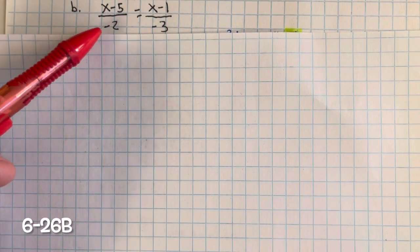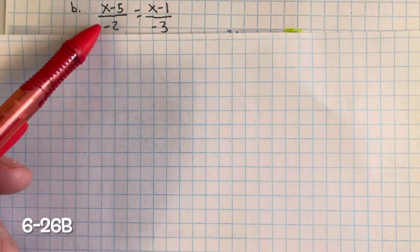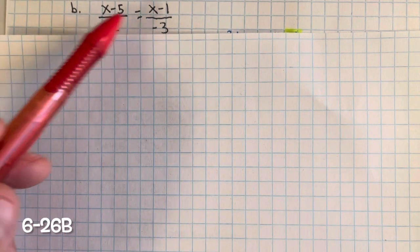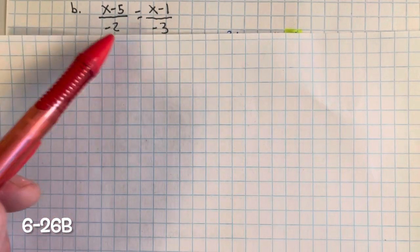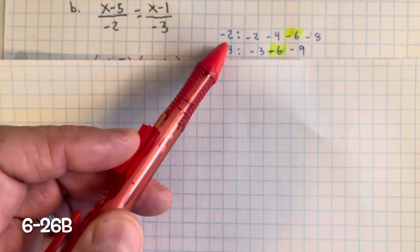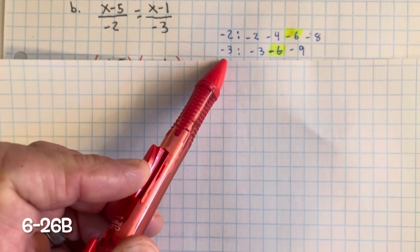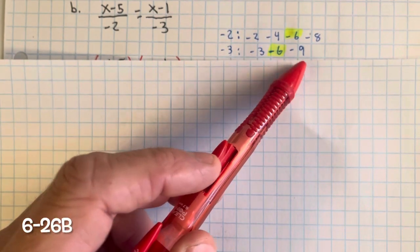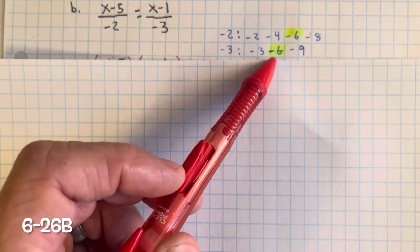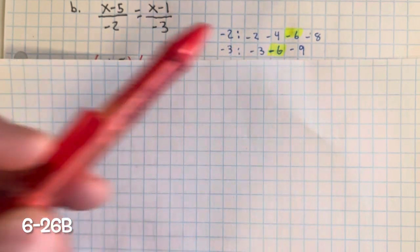Problem 626B — we need to solve for x. One way to solve for x is by using the fraction buster method to eliminate the denominators. We can do that by multiplying each side of the equation by the least common multiple of negative 2 and negative 3. The multiples of negative 2 are negative 4, negative 6, negative 8. The multiples of negative 3 are negative 3, negative 6, negative 9. The least common multiple — the first multiple divisible by both negative 3 and negative 2 — is negative 6.